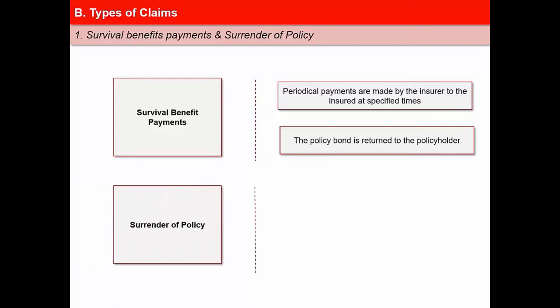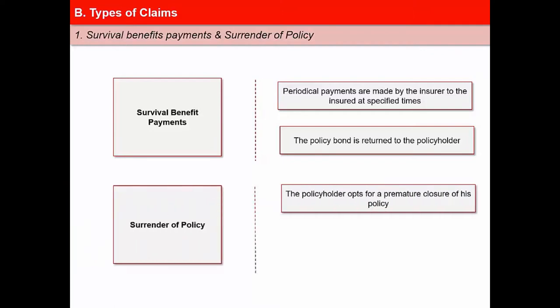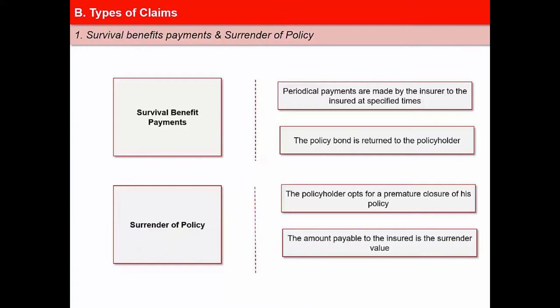The second type is surrender of policy. The policyholder opts for a premature closure of his policy, which is a voluntary termination of the policy contract. A policy can be surrendered only if it has acquired paid-up value. The amount payable to the insured is the surrender value, which is usually a percentage of the premiums paid.